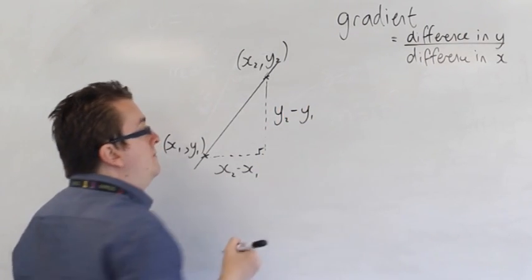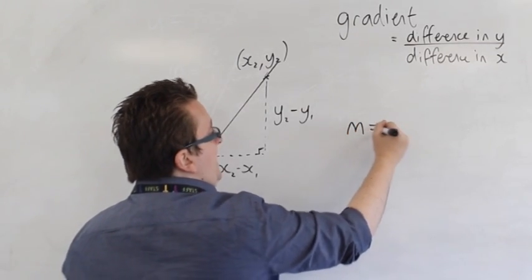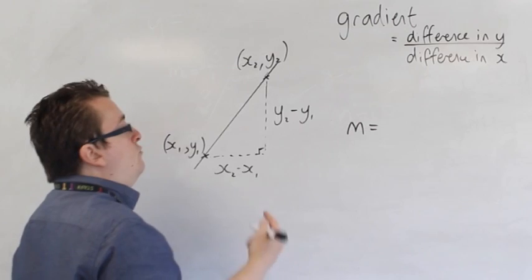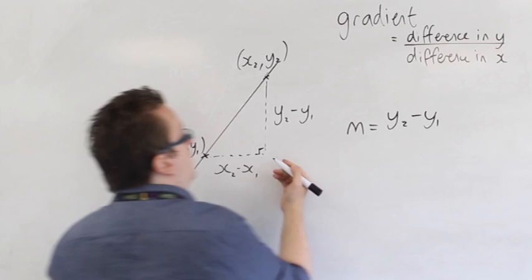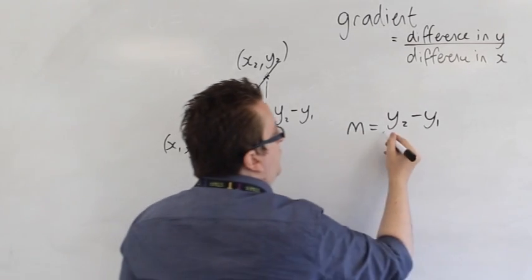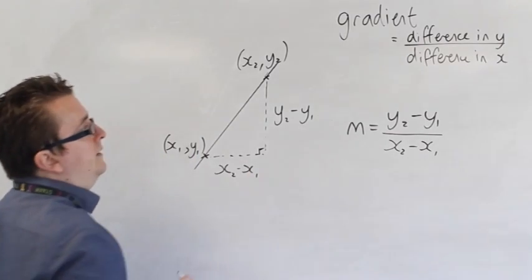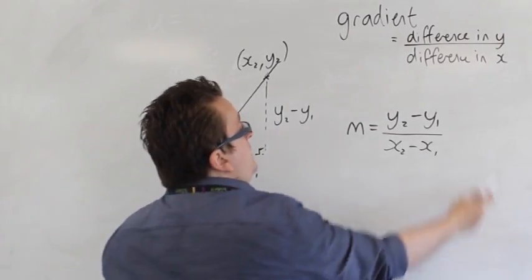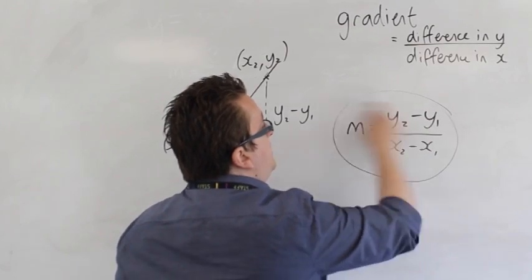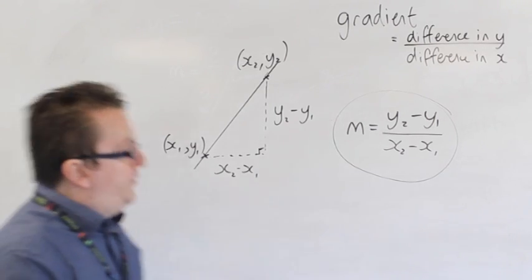So then you can say that the gradient of any line, in general between two points, is the difference in the Ys - so the height of that triangle - divided by the width of that triangle. So the difference of Ys divided by the difference in Xs, and you will find that M, the gradient of a line, can be defined this way.